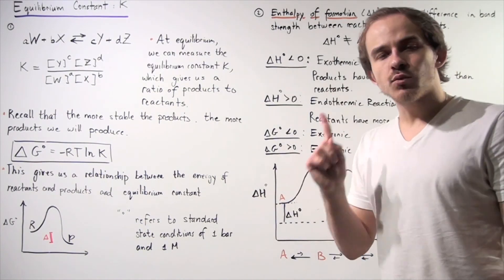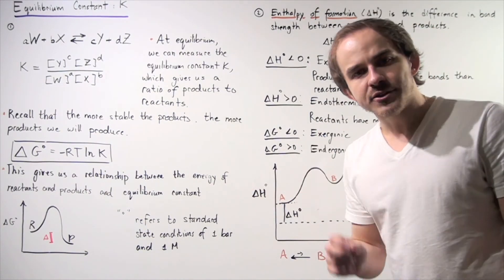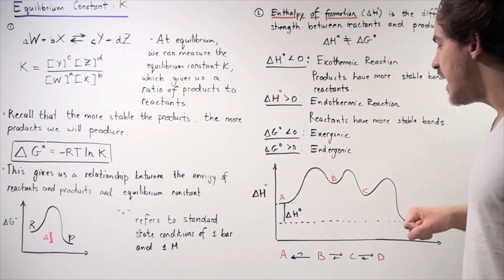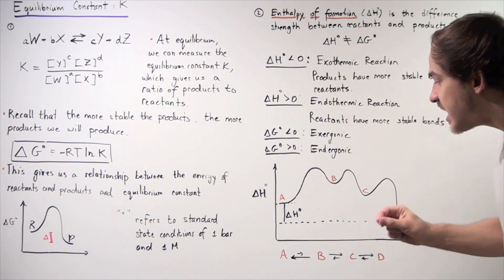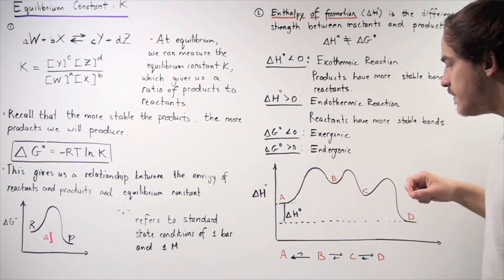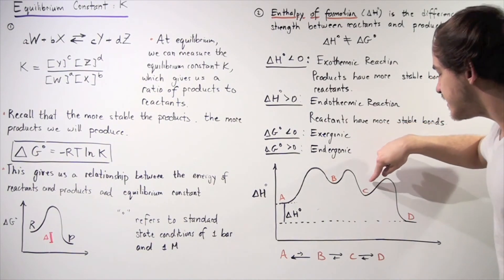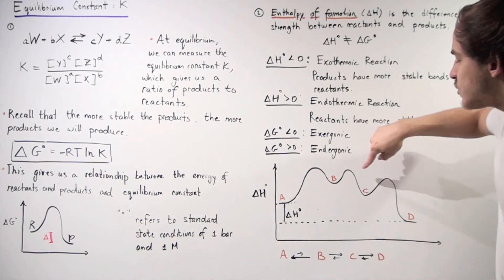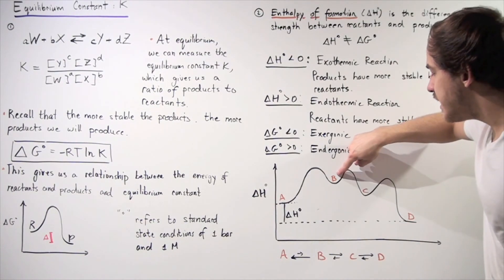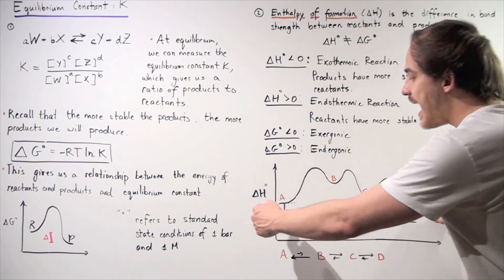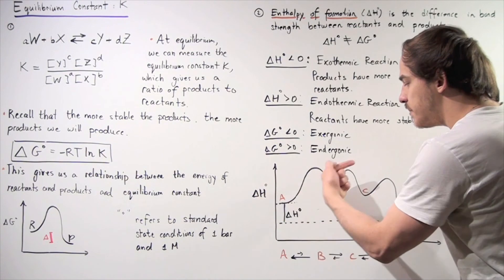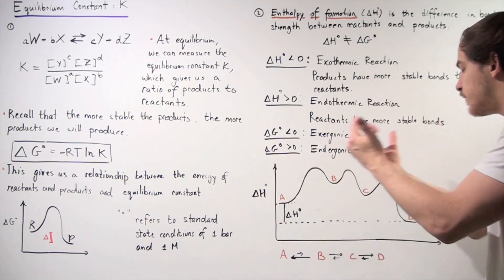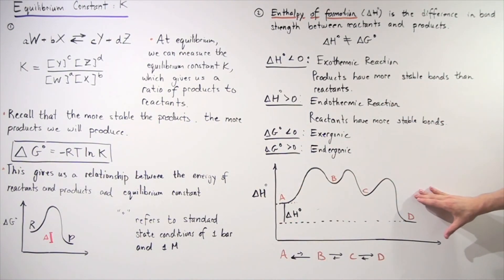A will be very likely to produce D. In other words, as long as we have enough energy to overcome this relatively high activation energy and produce some of B, B will produce C and C will produce D. And according to Le Chatelier's principle, as we decrease B to produce C and D, A will keep producing B. Eventually, a lot of the A will be converted to our final product, D.